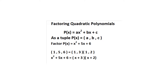Factoring quadratic polynomials: p of x equals a·x² plus b·x plus c, written as the tuple (a, b, c). Given the problem to factor p(x) = x² + 5x + 6, we write the tuple 1, 5, 6. We ask: what two numbers multiply to get 6 and add to get 5? That's 2 and 3. So we write 1,3 and 1,2, giving us (x + 3)(x + 2).